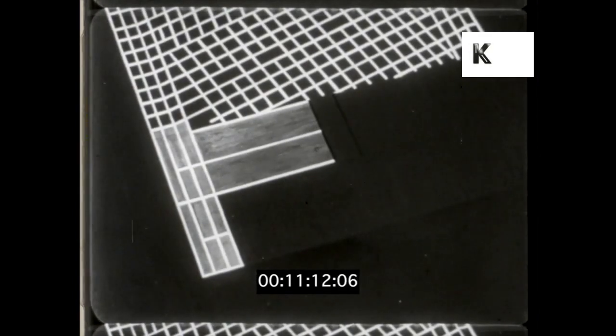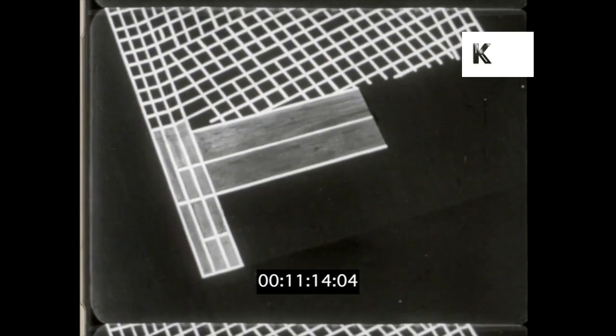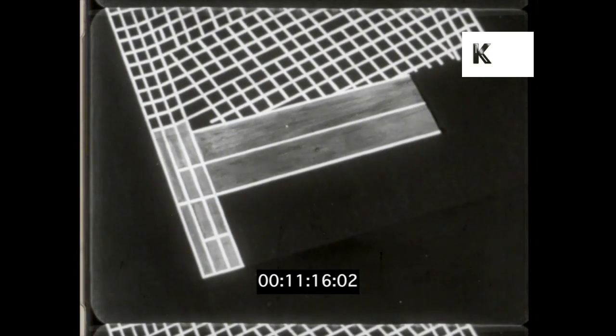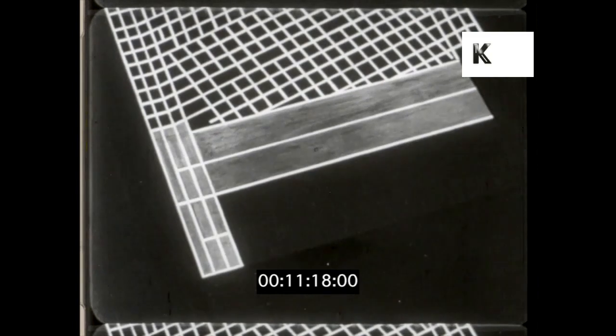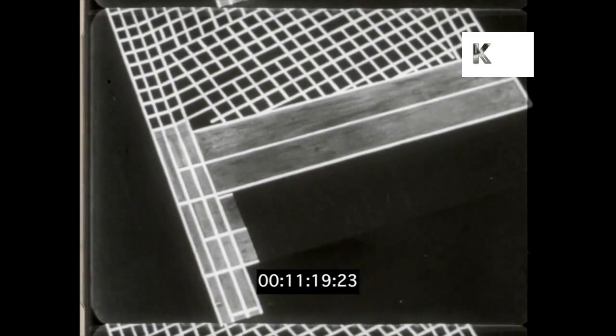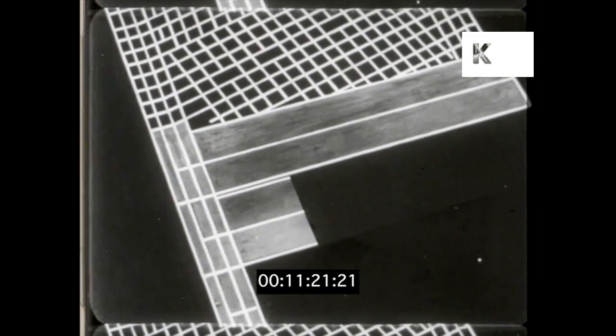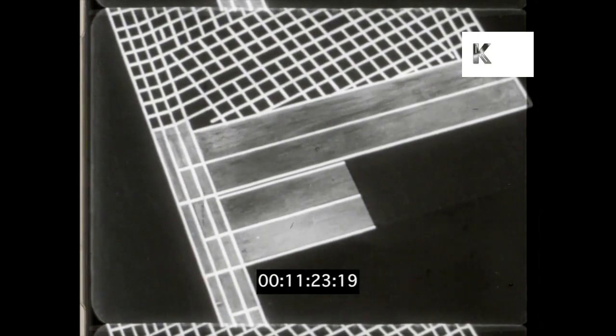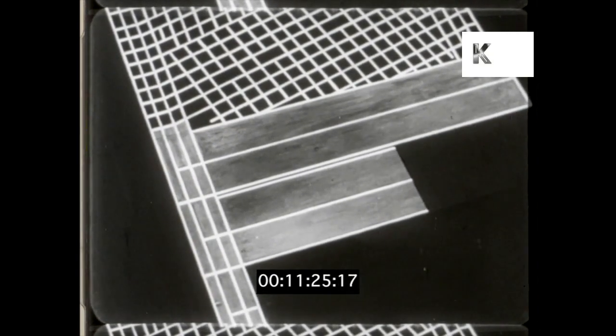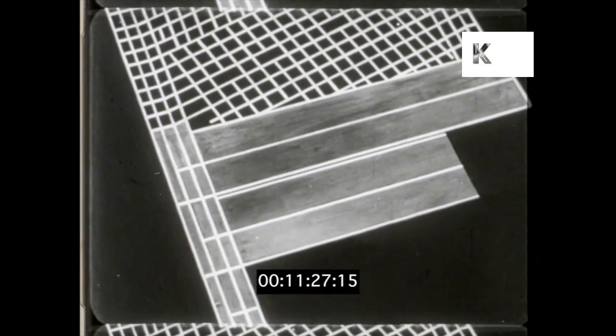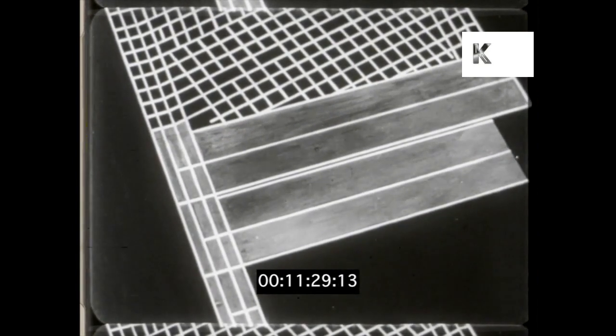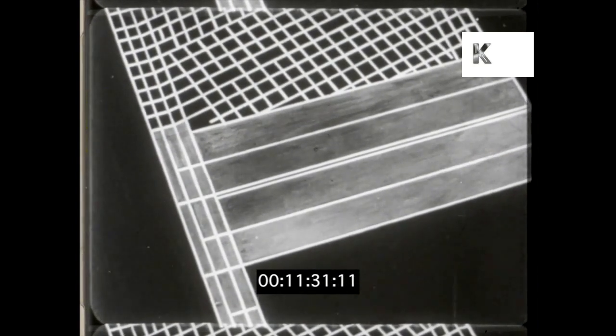In long wall mining, a coal face perhaps 200 yards long is started beside the main roadway and is pushed forward into the solid coal forming a panel. Roadways run down each side of the panel and sometimes down the middle. And along one of them runs the conveyor belt that carries the coal away. They also bring air to the coal face.